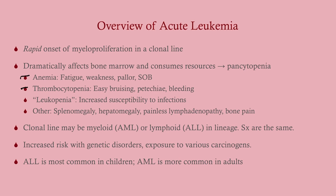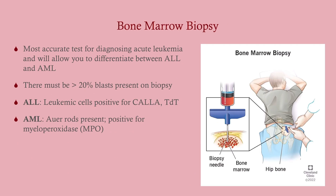ALL is the most common leukemia in children, accounting for 75% of cases, but AML is more common in adults and accounts for about 25% of cases in children. So if you're dealing with a leukemic adult, you're probably dealing with AML, but you still need to confirm.